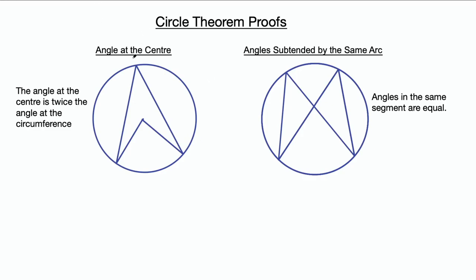The first one is angle at the center. This theorem says the angle at the center is twice the angle at the circumference. The angle at the center is this angle here, and the angle at the circumference is this one over here — so this angle is twice this angle up here.